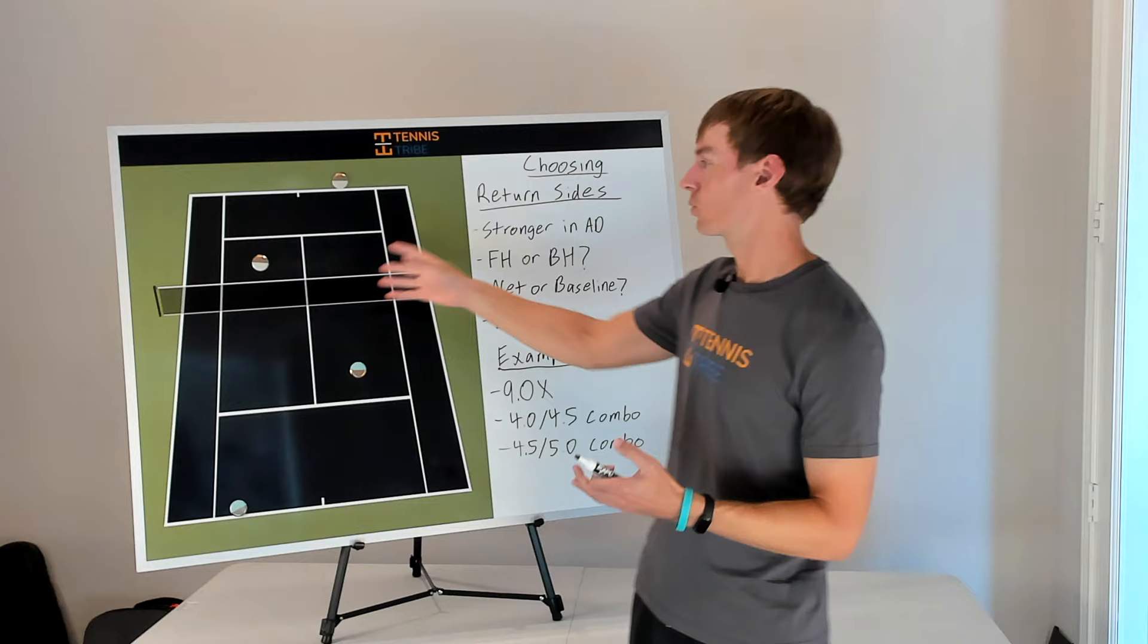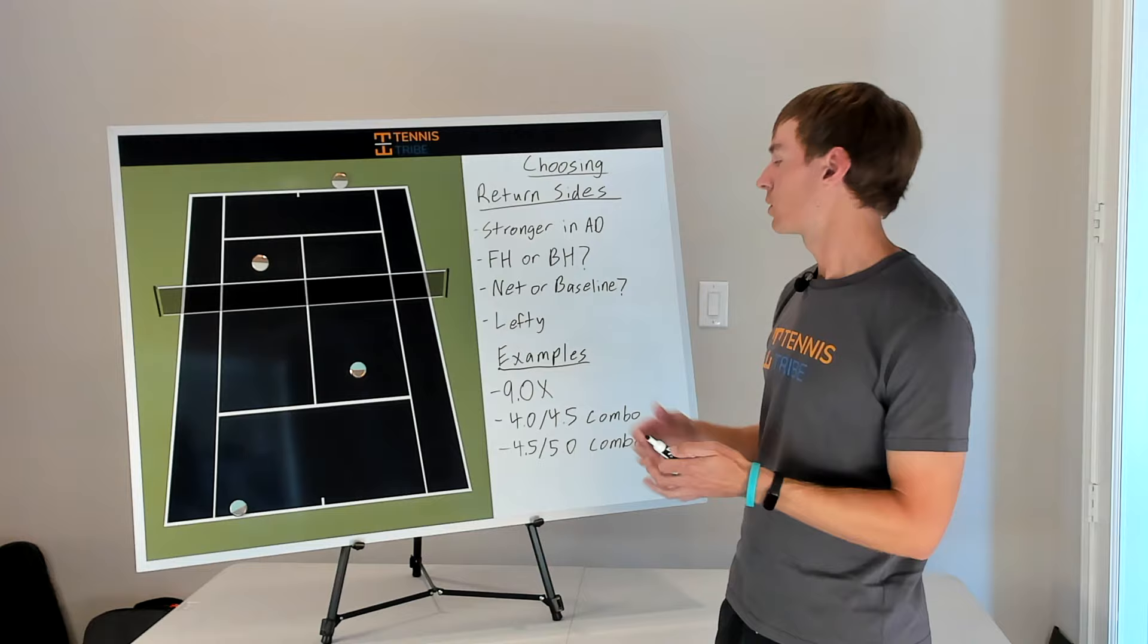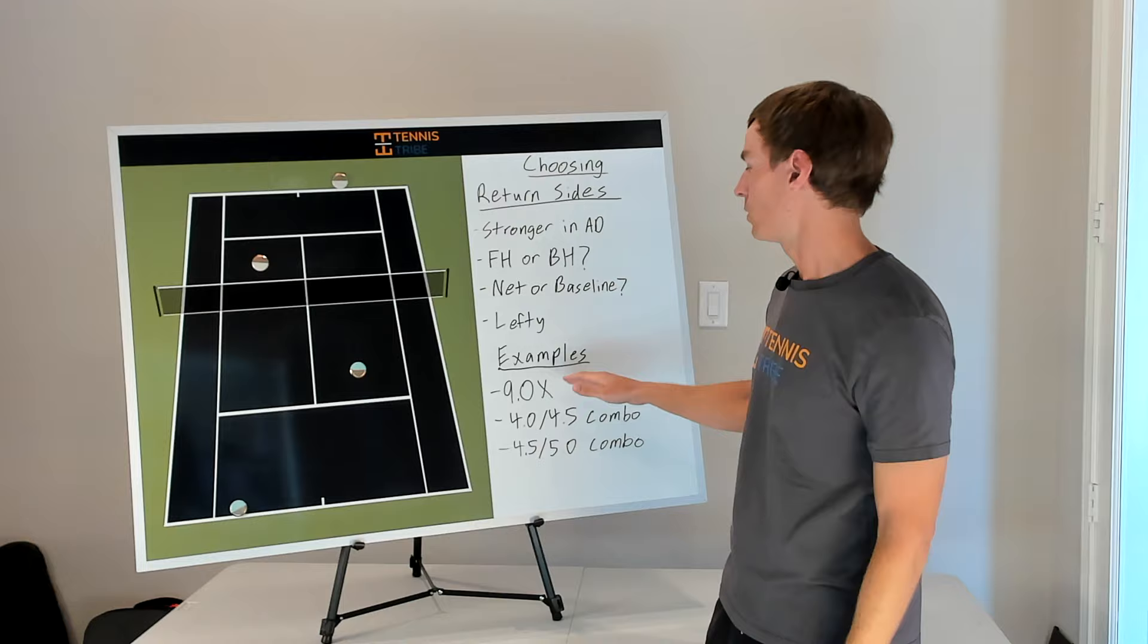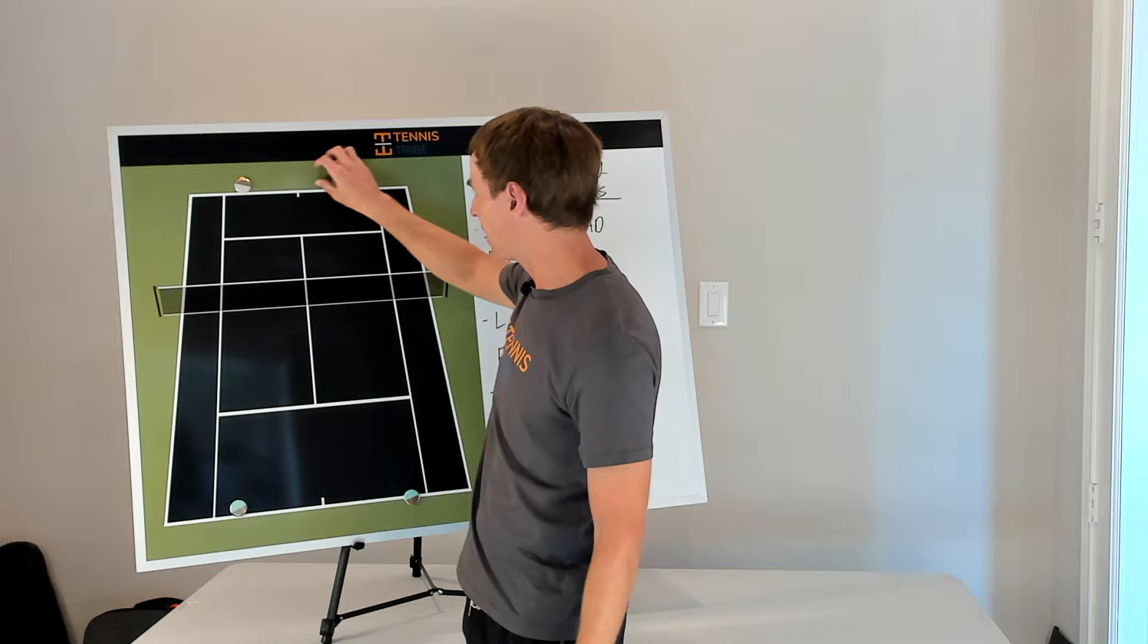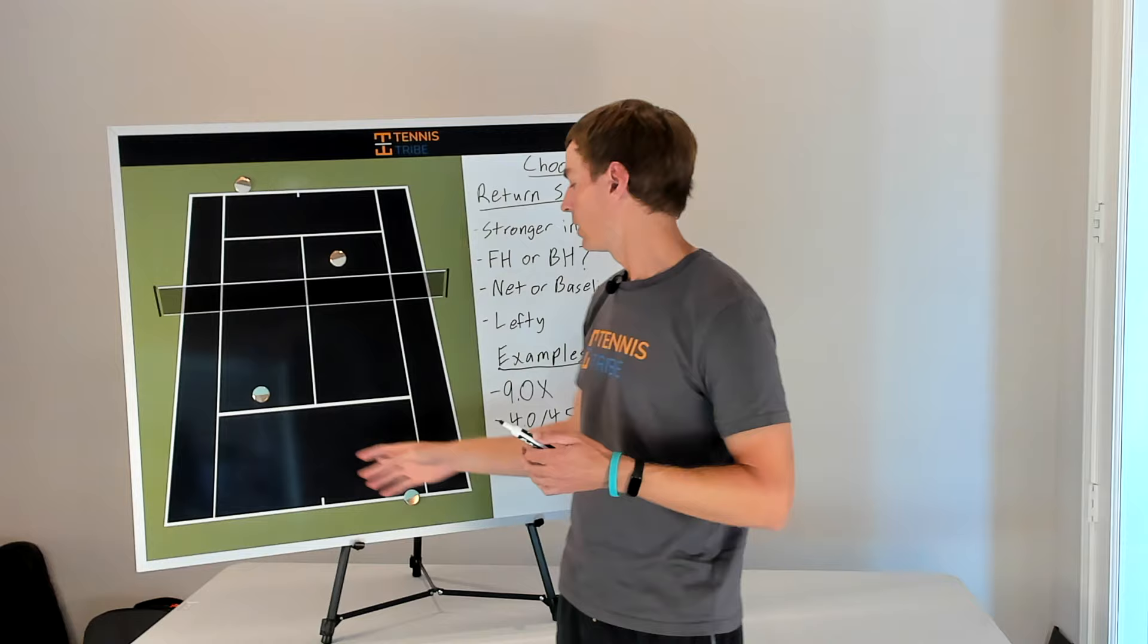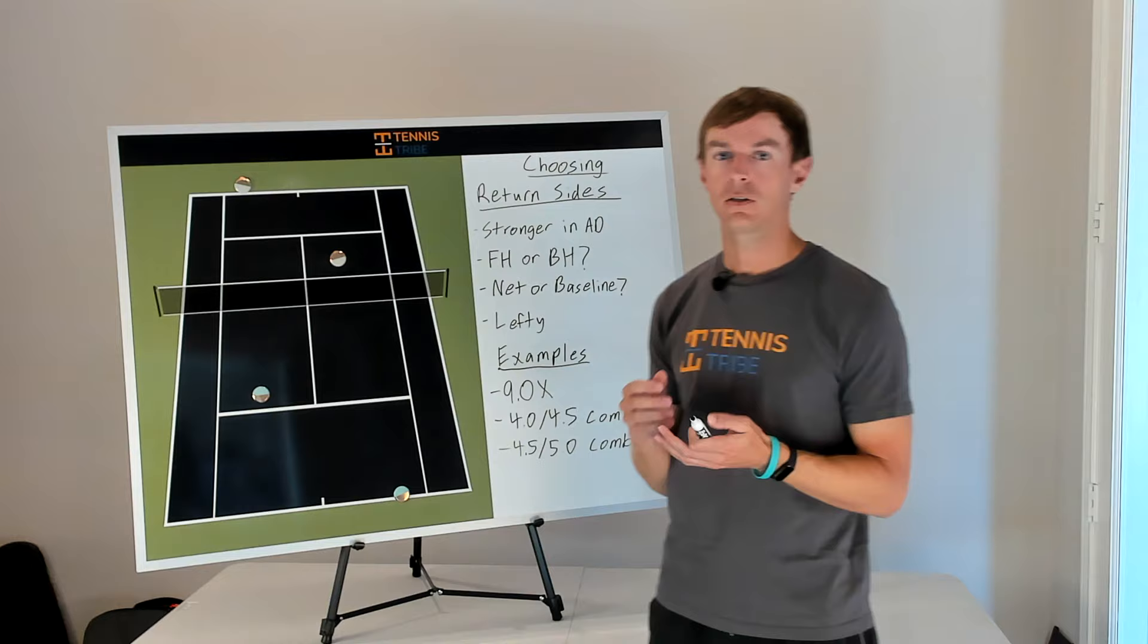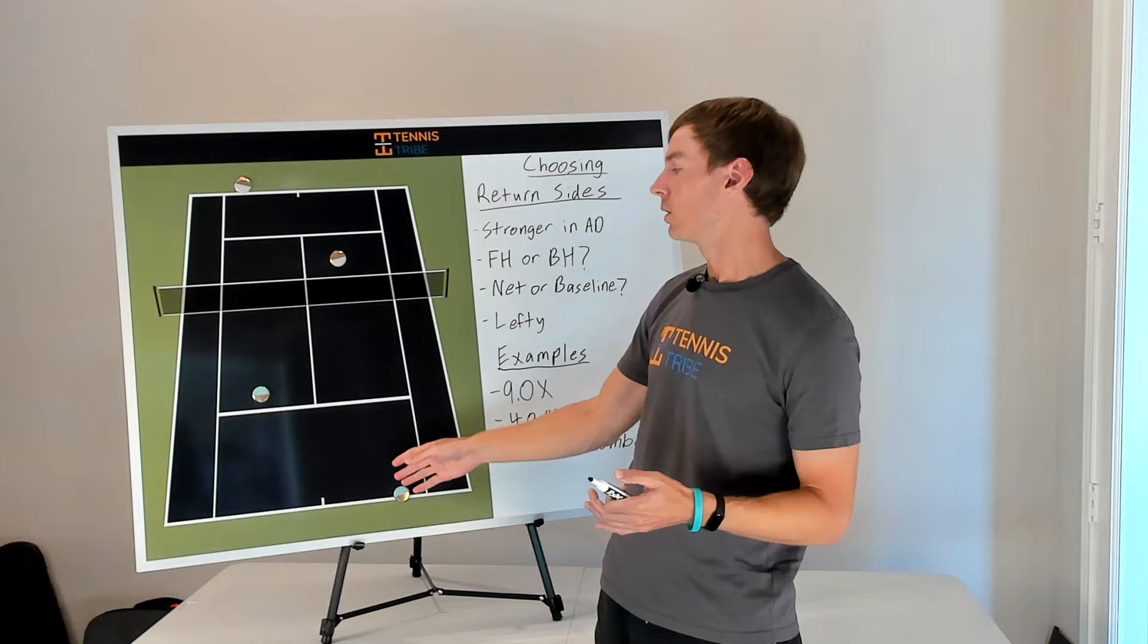So a couple of examples here from the last couple of years where I've had issues choosing return sides or put the stronger player in the deuce court. So recently, I was with my team at 9-0 mixed sectionals, and one of our combos was a 4-5 lady, a 4-5 guy, and the guy had a really strong backhand, and the girl preferred her forehand. So the guy overall is probably a little bit stronger player, but he really has a much better backhand than forehand. And when they were warming up, I was talking to them, and I said, you might consider playing with the guy, even though he's the stronger player, in the deuce court so that y'all can have your strengths in the middle.